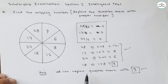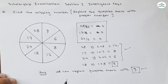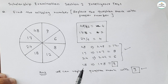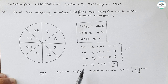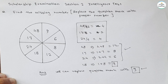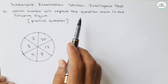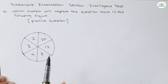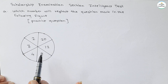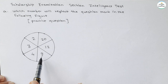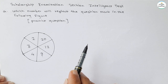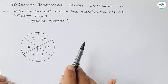As usual, there is one practice question for you. So try to answer it in the comment section, and as usual I will give the detailed explanation of the solution in the next video. The practice question: again a circle is given. You have to find the relation between opposite numbers and find the number that will replace the question mark. Do answer in the comment section; I will give the detailed explanation of the answer in the next video.